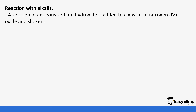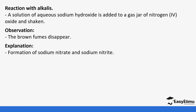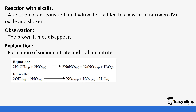Nitrogen 4 oxide also reacts with alkalis since it is acidic in nature. When aqueous sodium hydroxide is added to a jar containing nitrogen 4 oxide, the brown fumes disappear because two salts are formed: sodium nitrate and sodium nitrite. The equation is: sodium hydroxide plus nitrogen 4 oxide forms sodium nitrate, sodium nitrite, and water. The ionic equation removes the spectator sodium ions since they are aqueous on both sides.